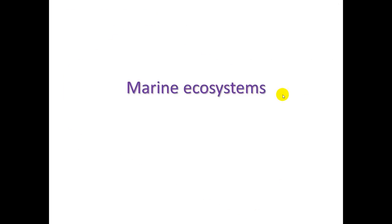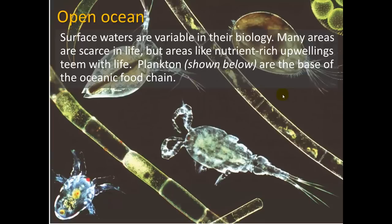In the open ocean, surface waters are variable in biology. Many areas are scarce in life, but areas like nutrient-rich upwellings teem with life. Plankton are the base of the oceanic food chain — the autotrophs capturing sunlight so that energy can flow into the food chain.